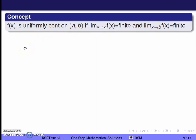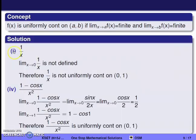Now checking the option (1−cos x)/x^2 on (0,1). For the limit as x→0: directly applying gives 0/0 form, so we apply L'Hôpital's rule, giving sin x / 2x, still 0/0, so apply again: cos x / 2. As x→0, this equals 1/2, which is finite. The limit as x→1 gives (1−cos 1)/1, which is also finite. Therefore (1−cos x)/x^2 is uniformly continuous on (0,1). The correct option is the 4th option.